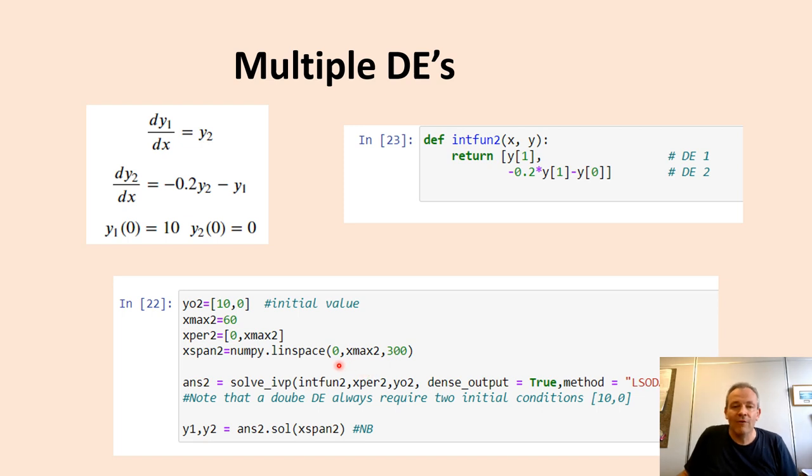Once again, solve_ivp like before. Exactly the same. Give it the function. The function now contains two differential equations. That's why the initial value contains two values. And the rest, dense output method, that's the same as before.